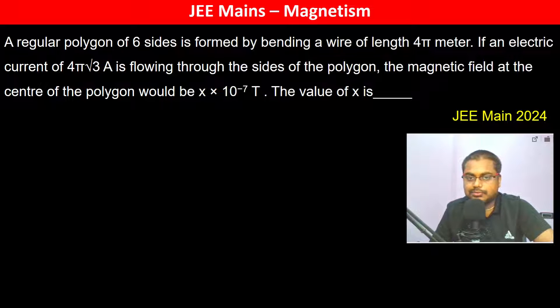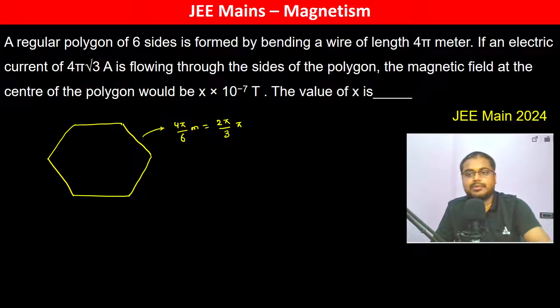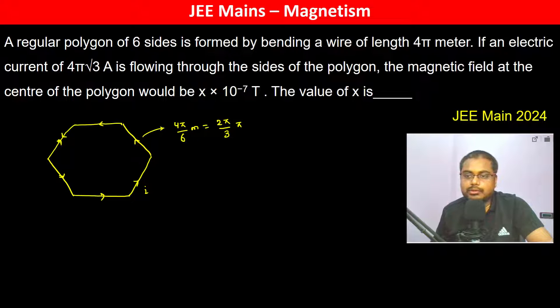A regular polygon of 6 sides is formed by bending a wire of length 4π meters. This becomes a hexagon, with one side being 4π/6 = 2π/3 meters. If an electric current of 4π√3 amperes flows through the sides of the polygon, what is the magnetic field at the center of the polygon?